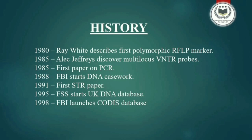Now talking about the history of DNA Typing. In the 1980s, Ray White described the first polymorphic RFLP marker. Then in 1985, Alec Jeffreys discovered multilocus VNTR probes. In the same year, the PCR technique was first published in the Journal of Science by Kary Mullis. Then in 1988, the FBI laboratory began forensic casework and is now the main provider of DNA testing services in the country.